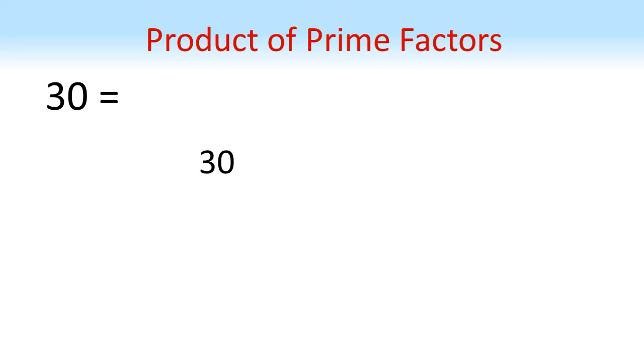Now there are multiple pairings we could use. We could do 2 times 15, do 5 times 6, doesn't matter what we pick. I'm going to go with 2 times 15. We have branches coming down to our two numbers.